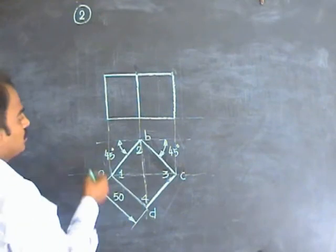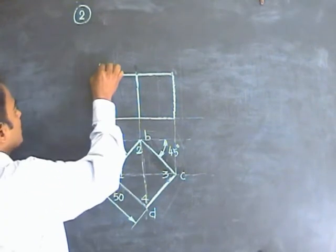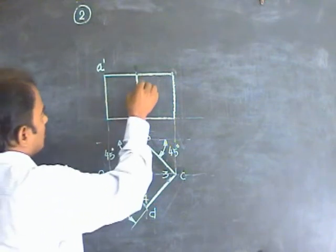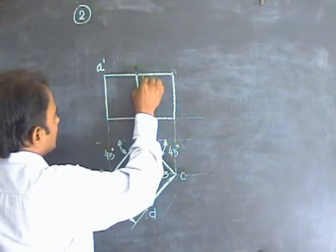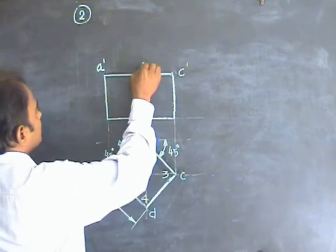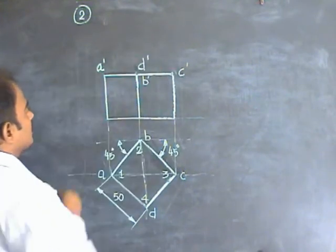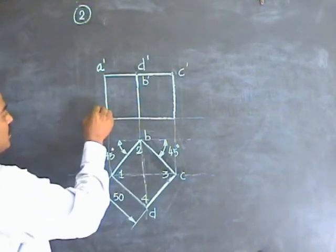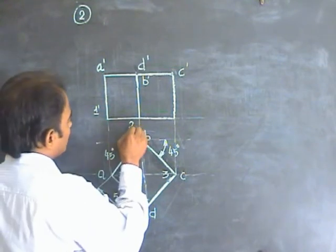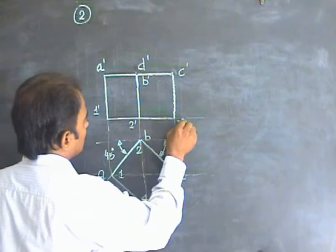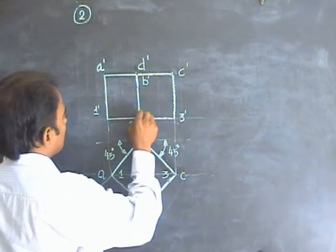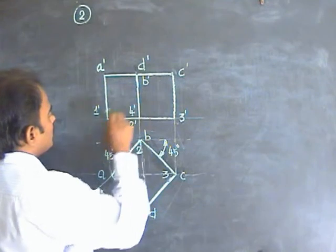So now, the corresponding names can be placed in the current view as well. D-dash is not visible. C-dash is visible. D-dash is visible. Similarly, 1-dash is visible. 2-dash is not visible. 3-dash is visible and 4-dash is also visible.